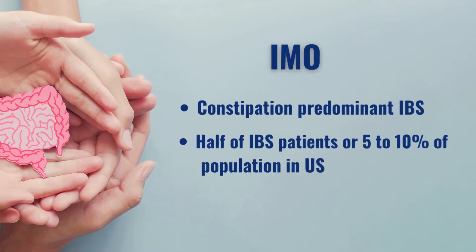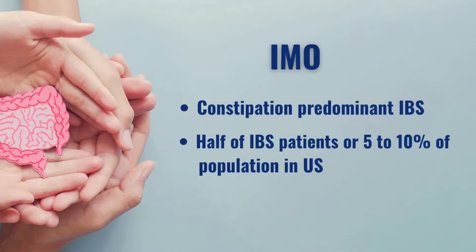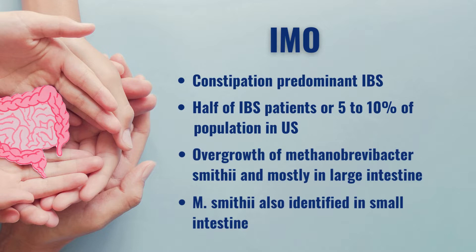Regarding IMO, we're talking about an overgrowth of methane-producing archaea organisms, a condition common in patients with constipation-predominant IBS. This represents approximately half of IBS patients, or five to ten percent of the population in the US. IMO used to be part of a SIBO diagnosis when high levels of methane were detected, but since these methanogens are not bacteria, we now refer to this as intestinal methanogen overgrowth, or IMO. Most IMO involves an overgrowth of Methanobrevibacter smithii, mostly in the large intestine, though M. smithii has also been identified in the small intestine.